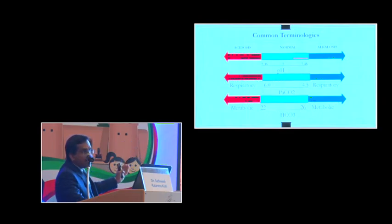Look at the PaCO2. If the PaCO2 is more than 6 kilopascal units, you call it respiratory acidosis. If it is less than 4.5, you say it is respiratory alkalosis. Look at the bicarbonate. If it is less than 22, you call it metabolic acidosis. If it is more than 26, you call it metabolic alkalosis.